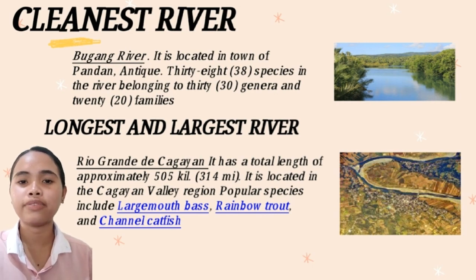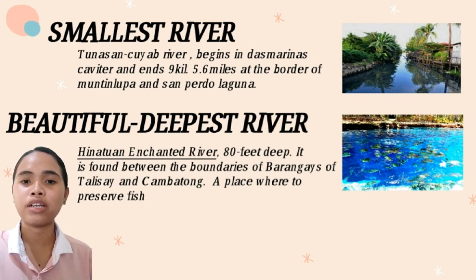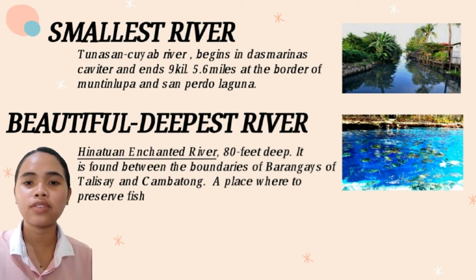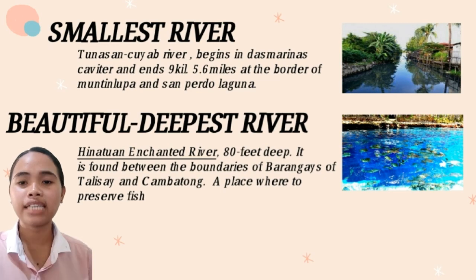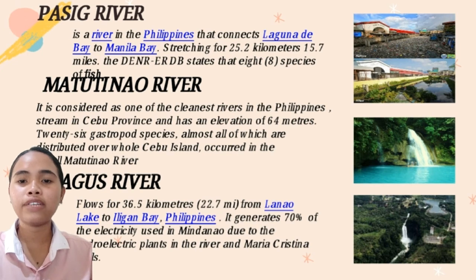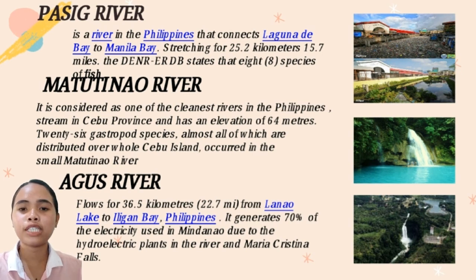The smallest river is the Tunasan-Cuya River, which begins in Dasmariñas, Cavite, and ends at the border of Muntinlupa and San Pedro, Laguna. The most beautiful and deepest river is the Hinatuan Enchanted River, 80 feet deep, found between the barangays of Talisay and Cambantong. The Pasig River connects Laguna de Bay to Manila Bay, with 8 species of fish found in it. The Agus River flows 36.5 km from Lake Lanao to Iligan Bay and generates 70% of the electricity used in Mindanao through its hydroelectric plants and the Maria Cristina Falls.